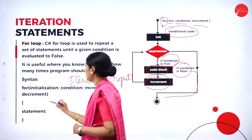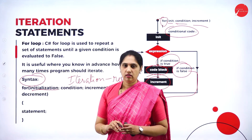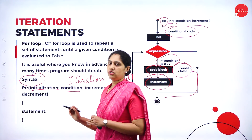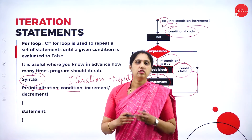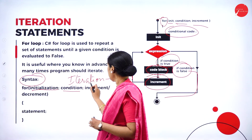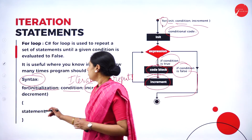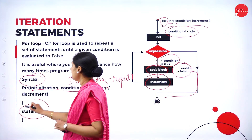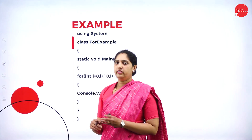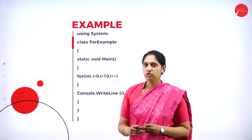So how to write the syntax? First is initialization — assign from where it should start. Next, check the condition — how many times it should repeat, based on that condition. Then each time after execution of the code, it should increment. When this condition is satisfied, the for loop statement will be executed. The procedure is: variable, condition, increment.